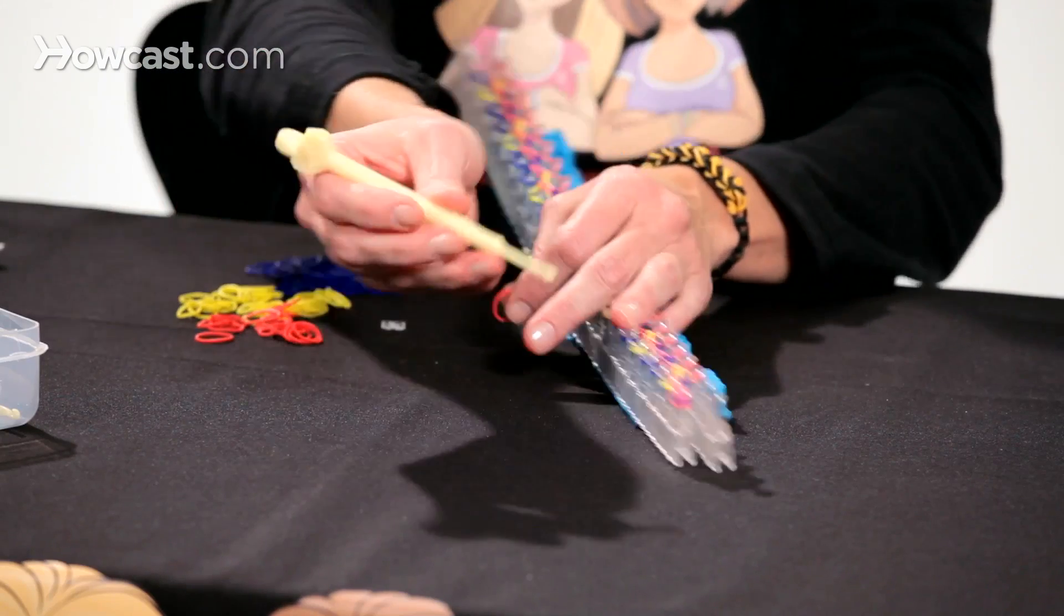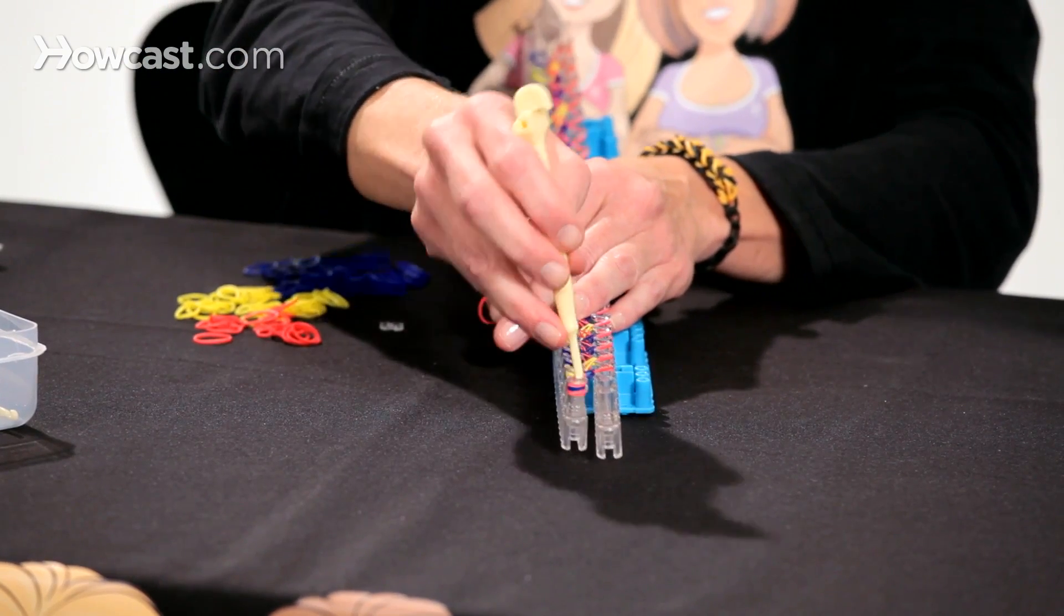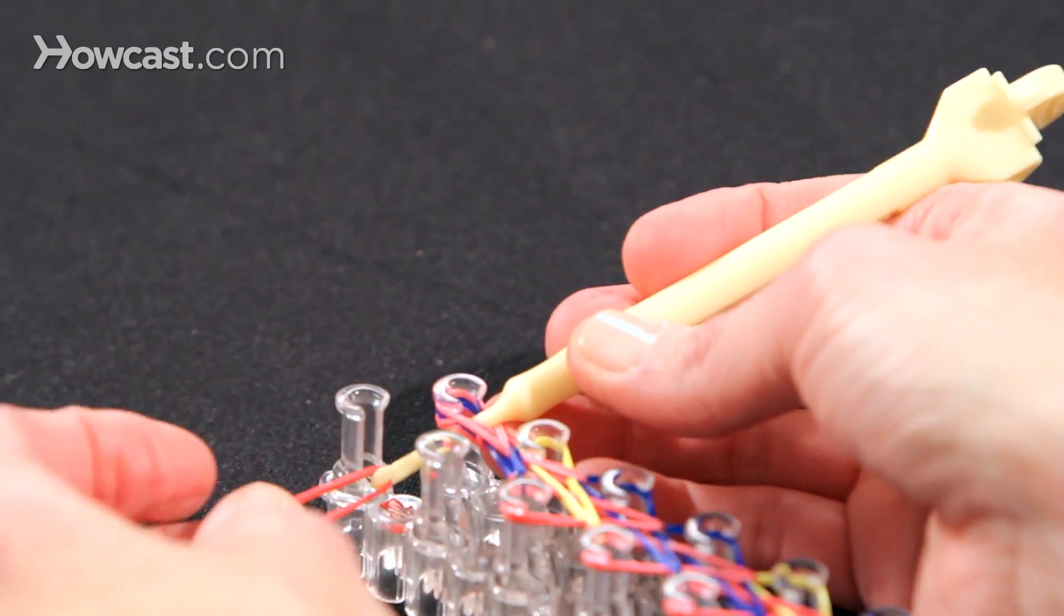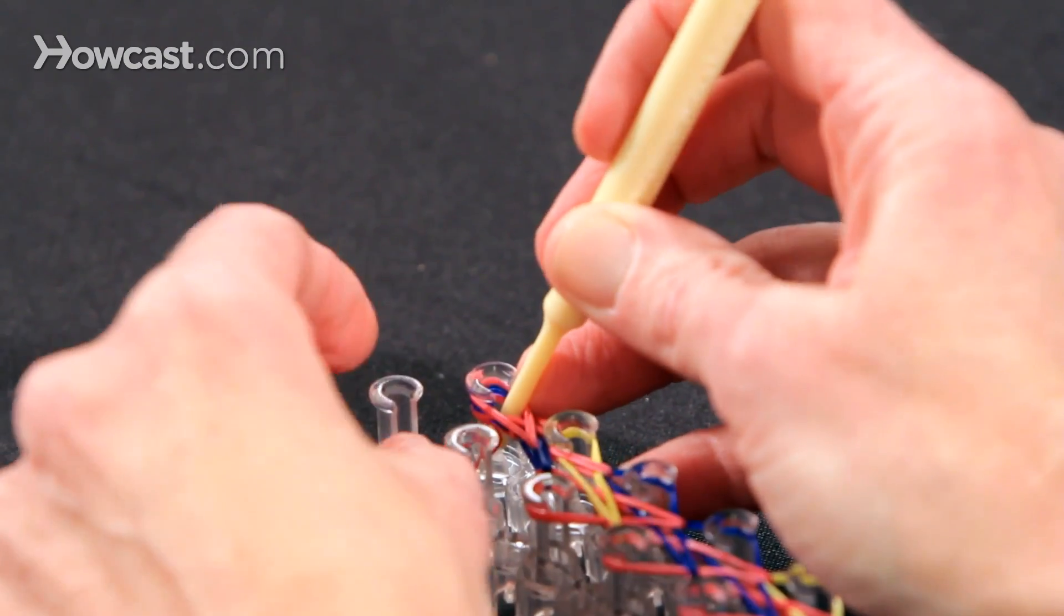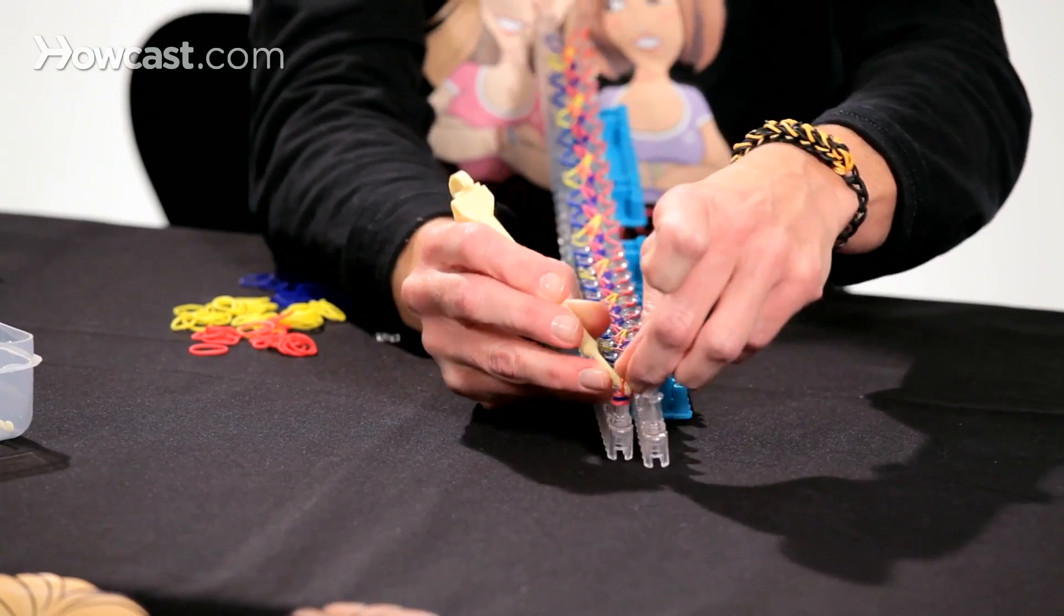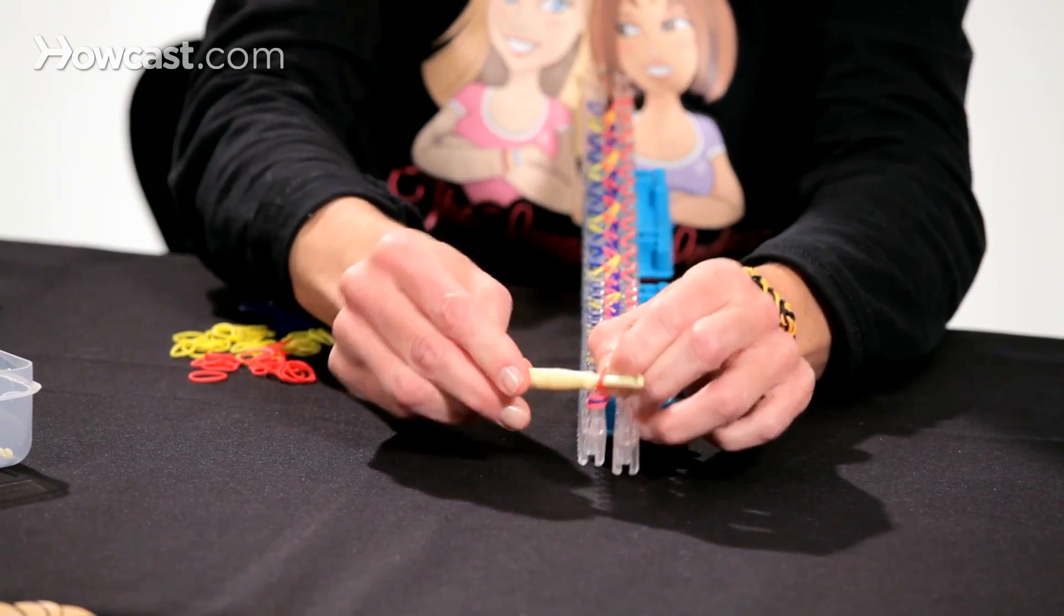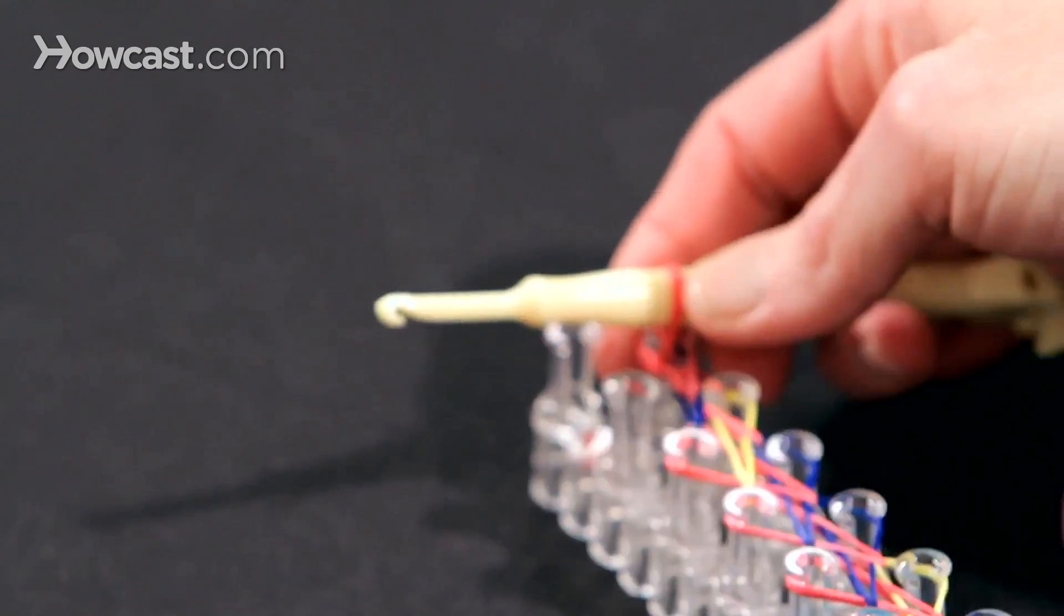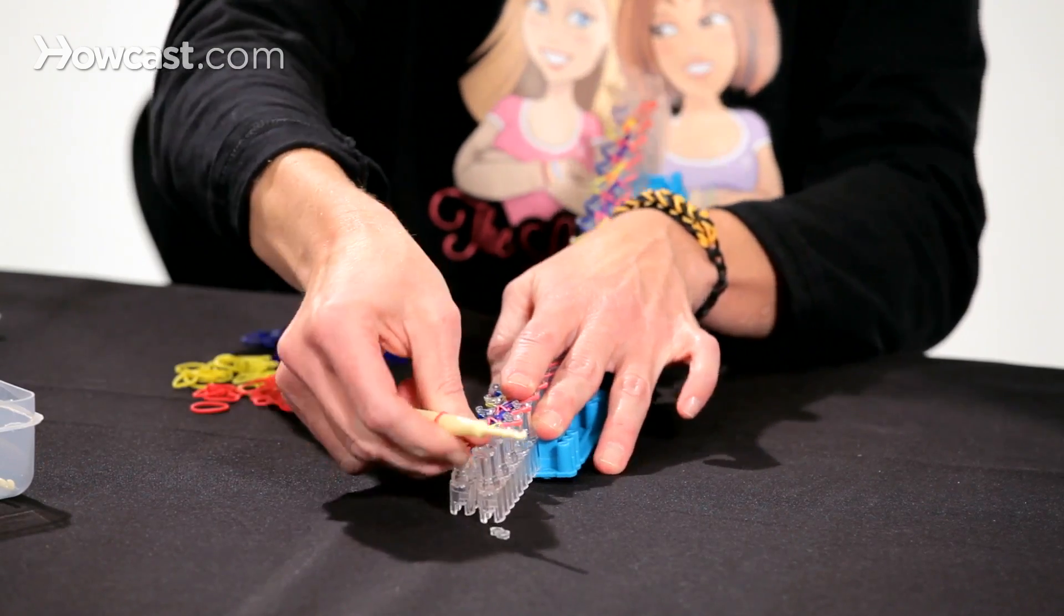Okay, now what I want to do is take my hook and push it through the last pin. Grab an extra band, put it on your hook and pull this band up and through. And we're going to push this up on your hook. And now we're ready to pull the bands off the loom.